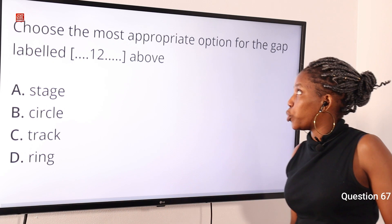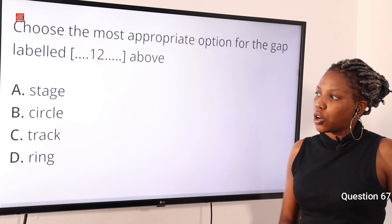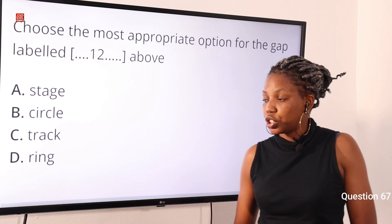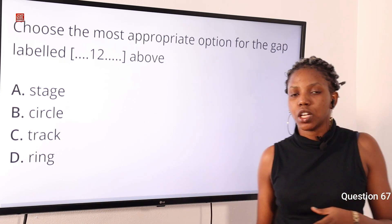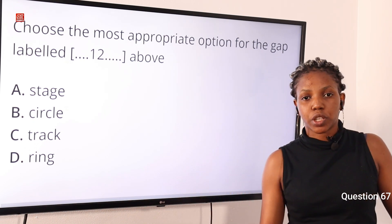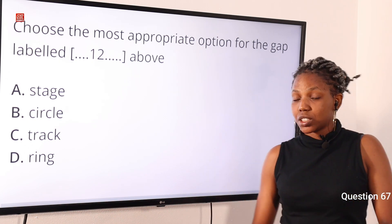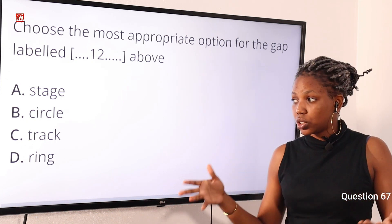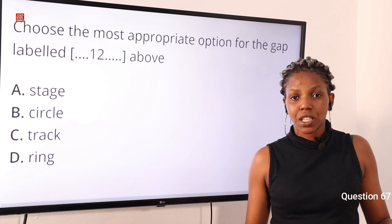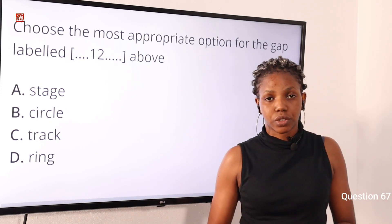Question 67: Choose the most appropriate option for the gap — option A: stage, option B: circle, option C: track, option D: ring. This part of the passage talks about the particular spot where the boxers fight one another. In the context of boxing, it is called a ring — not stage, not circle, not track. So option D is the correct answer.